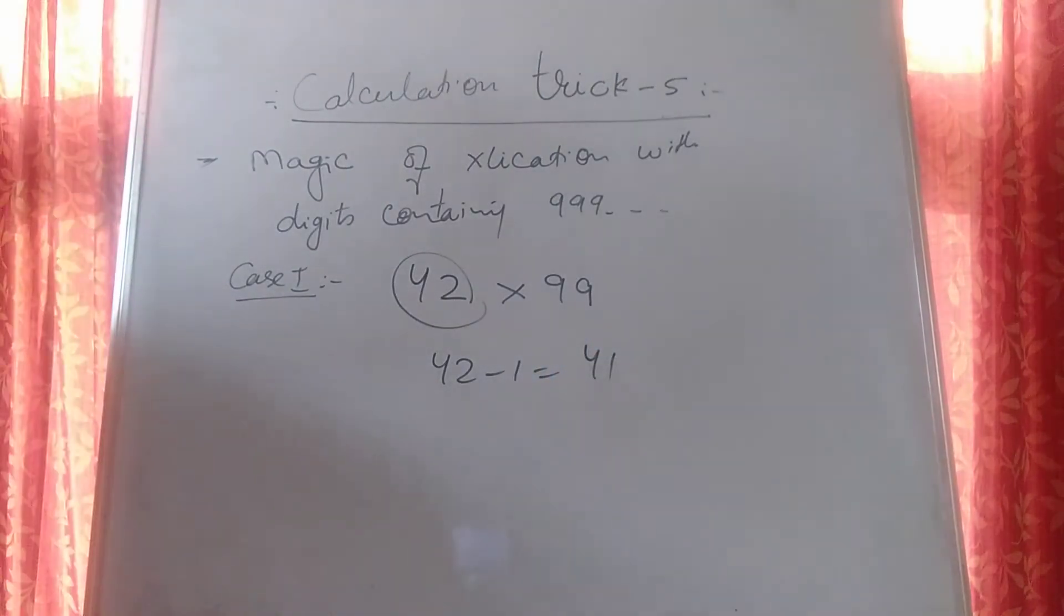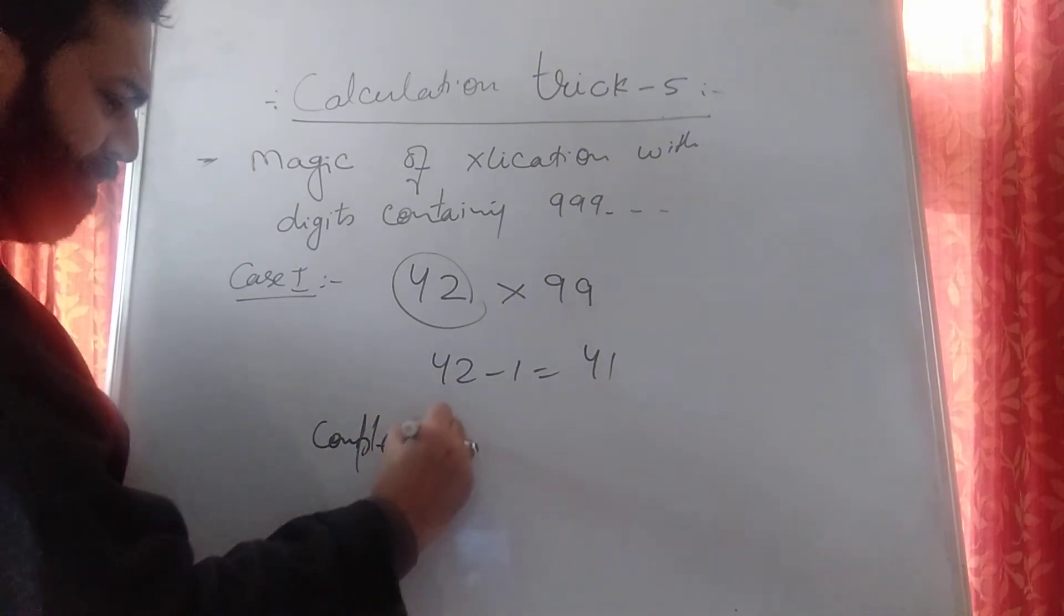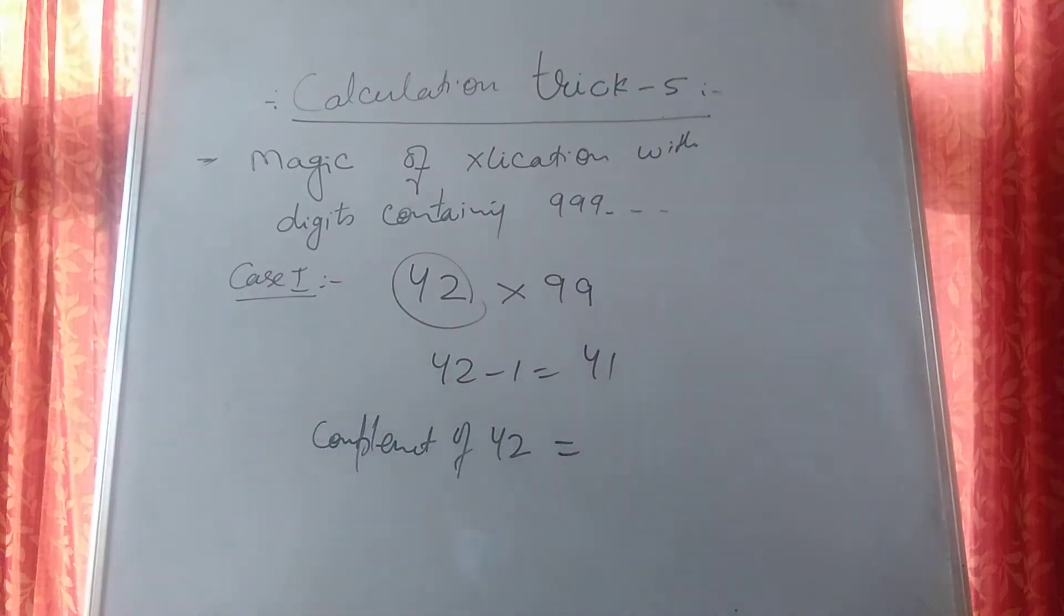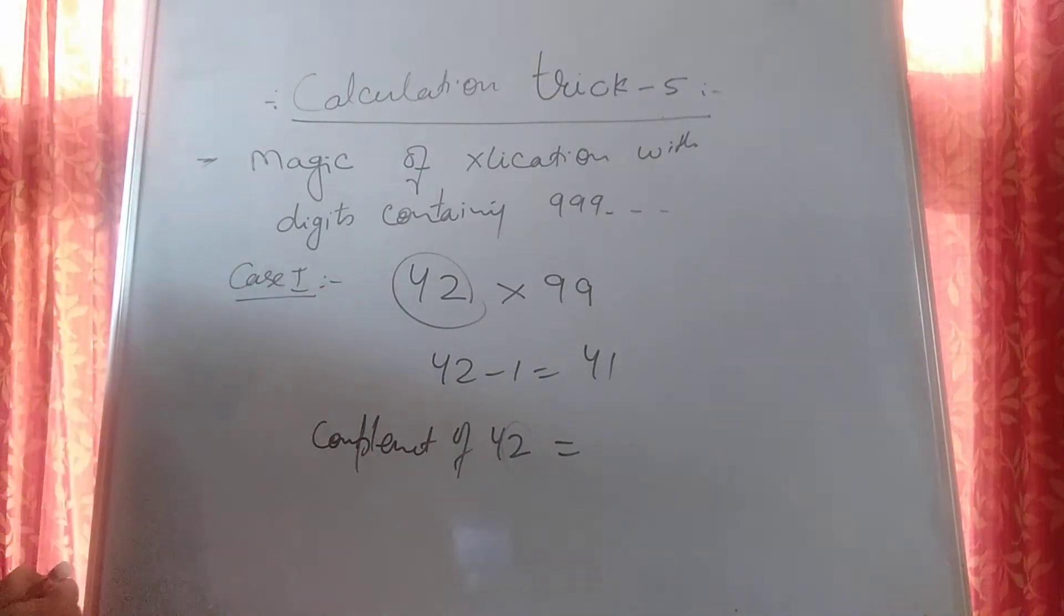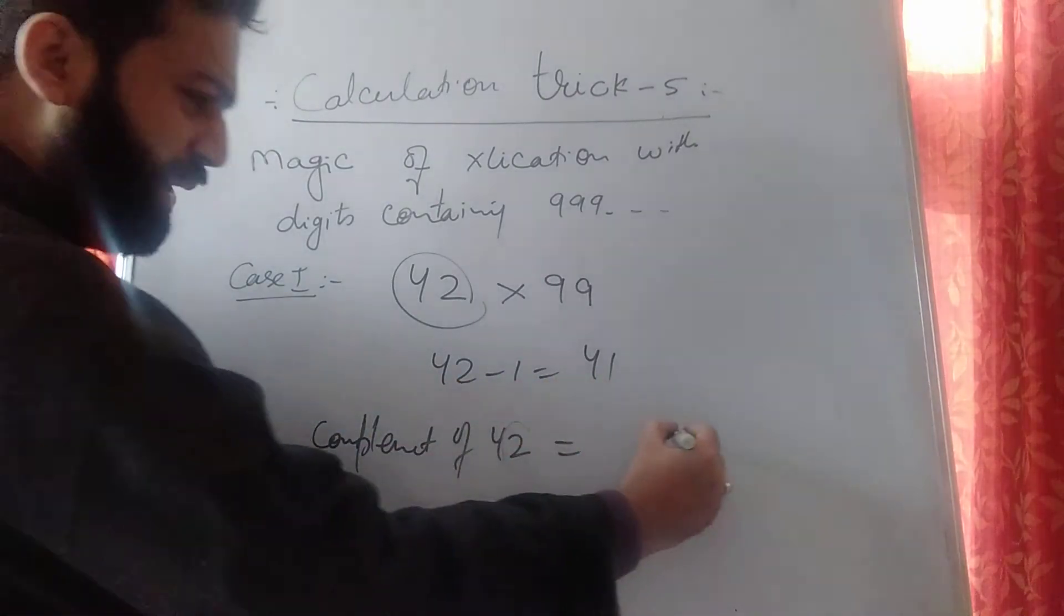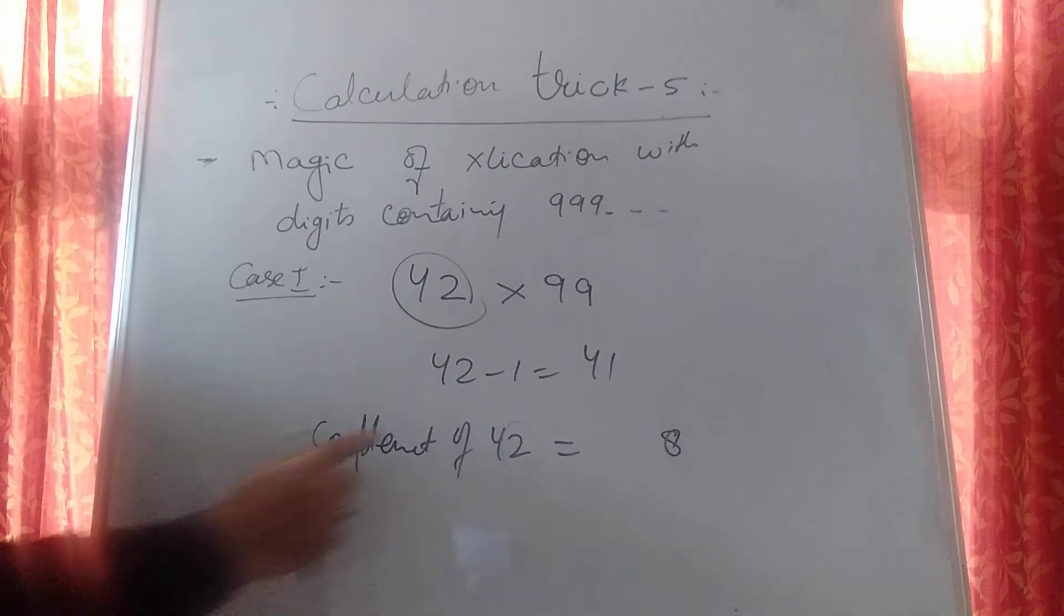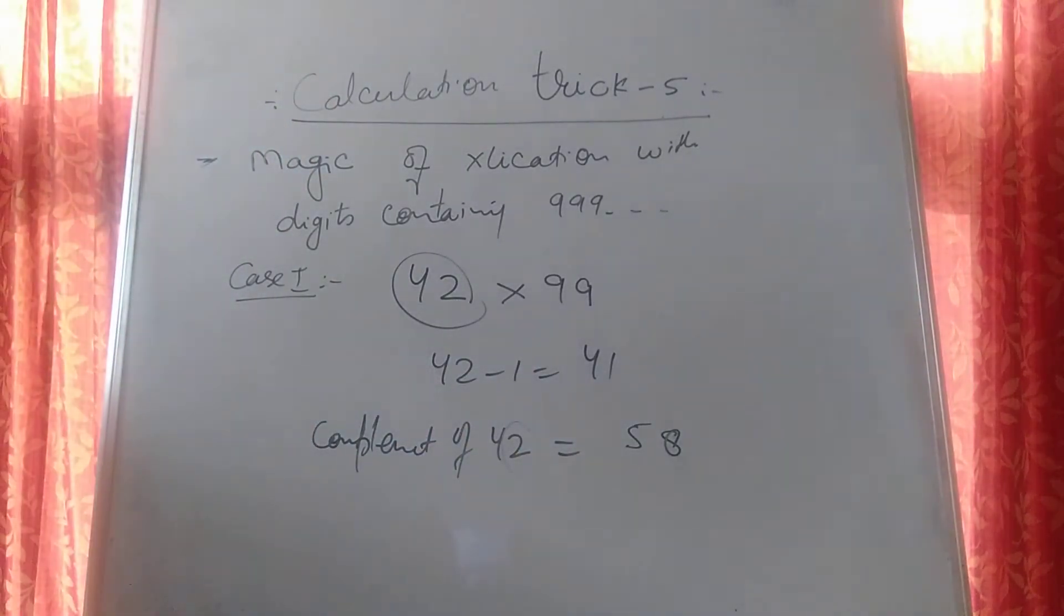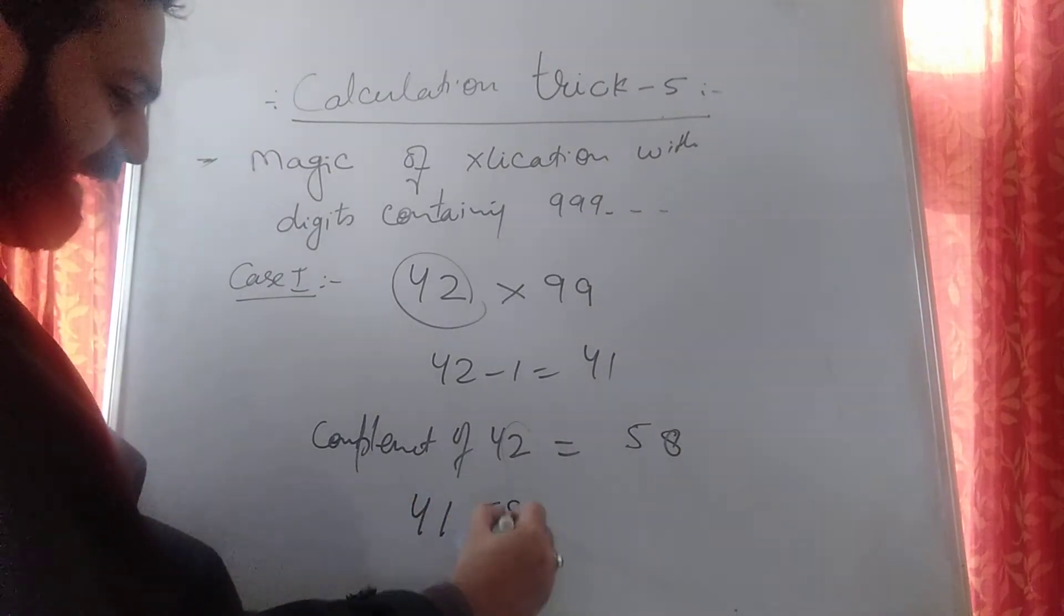What to do here? You have to subtract this 42 with 1. What you will get? You will get 41. Then second thing is you have to get complement of 42. The complement of 42 is subtract the last digit from 10. So 10 minus 2 is 8. And the rest of the digits by 9. 9 minus 4 is 5. So the answer will come out 4158.